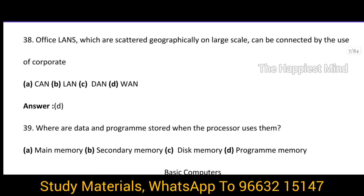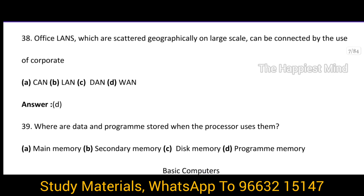Question 38. Office locations which are scattered geographically on a large scale can be connected by the use of corporate WAN — that is, Wide Area Network. The answer is option D.